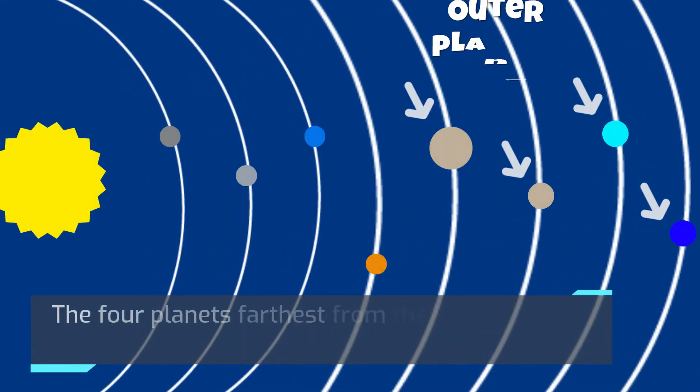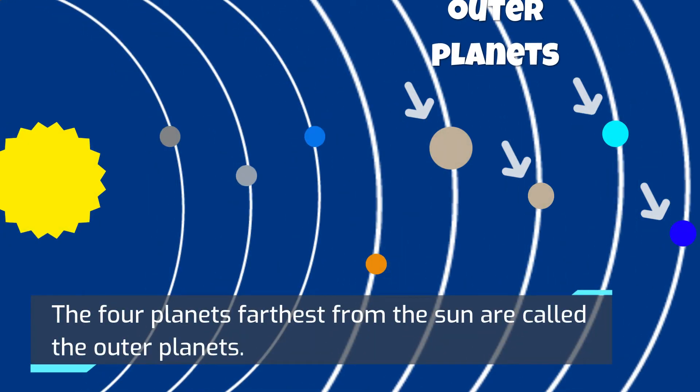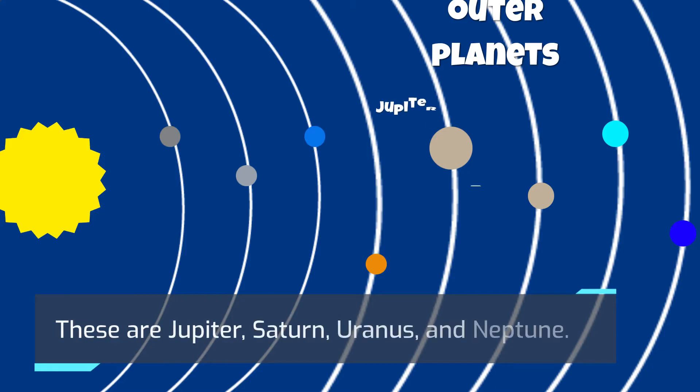The four planets farthest from the Sun are called the outer planets. These are Jupiter, Saturn, Uranus, and Neptune.